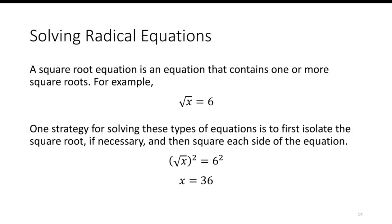A square root equation is an equation that contains one or more square roots. For us, we will only look at one. One strategy for solving these types of equations is to first isolate the square root if necessary, and then square each side of the equation. So the square root of x squared equals 6 squared, x equals 36.